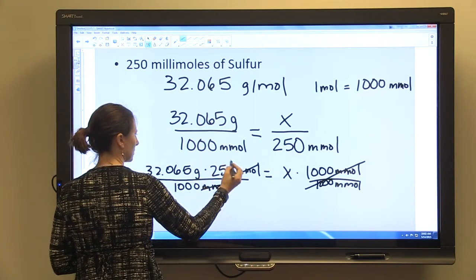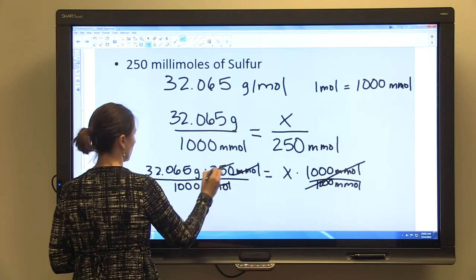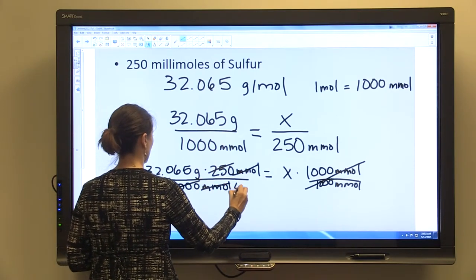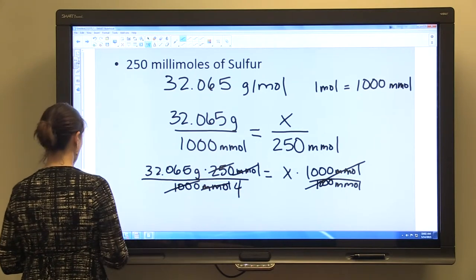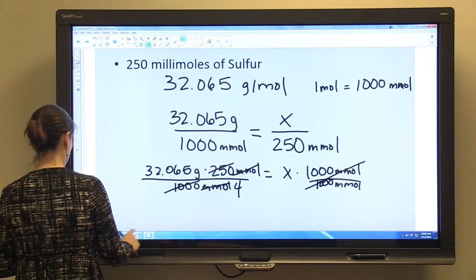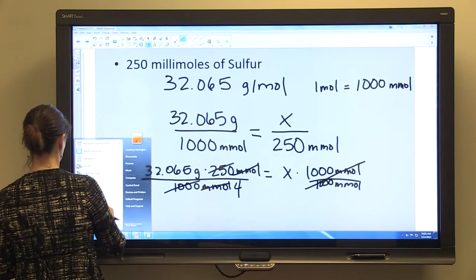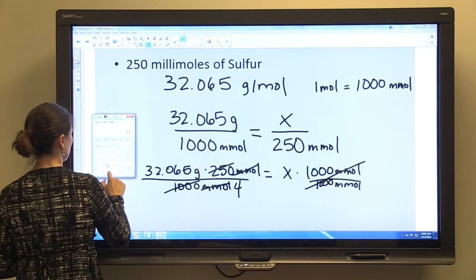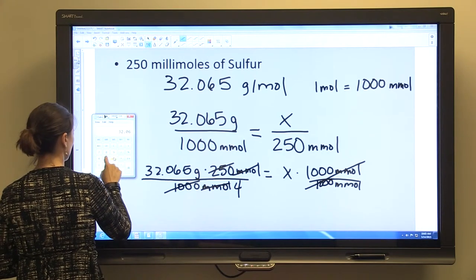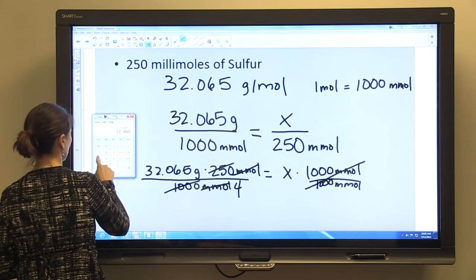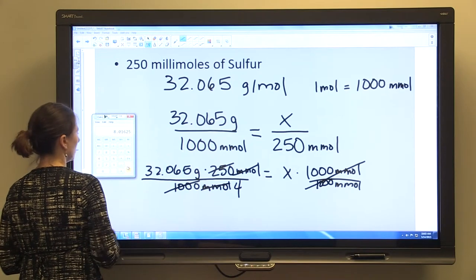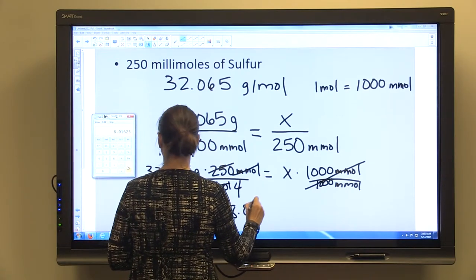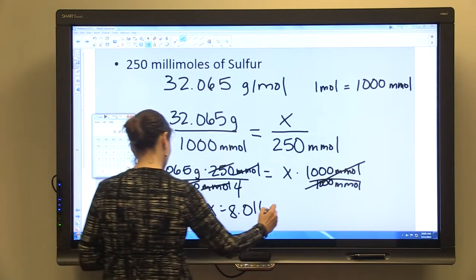And so if we multiply, actually, we can simplify 250 out of 1,000 to 1 out of 4. And so if we divide 32.065 divided by 4, we're going to have x equal to 8.016 grams.